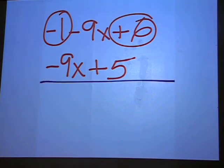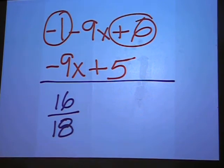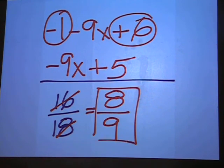Also, at the bottom of this page, if you have something like 16 over 18, don't leave a fraction unreduced. Both of those are even numbers. And 2 will go into 16 8 times and into 18 9 times, leaving you with an 8 over 9 for a final answer.